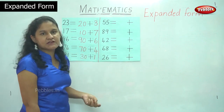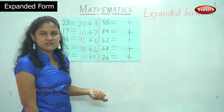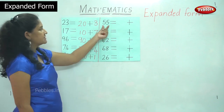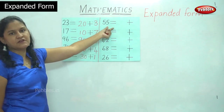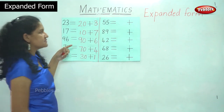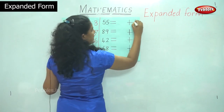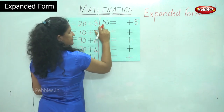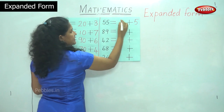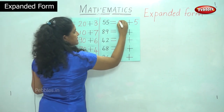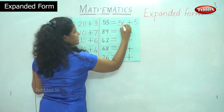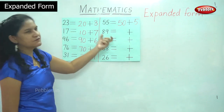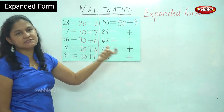I hope children you have understood the concept of expanded form. The next number is 55. In the ones place I have number 5 and in the tens place I have 5 tens, which is nothing but number 50. So 55 is equal to 50 plus 5.